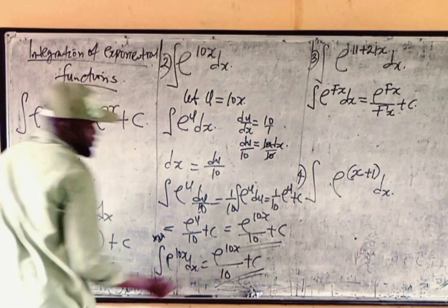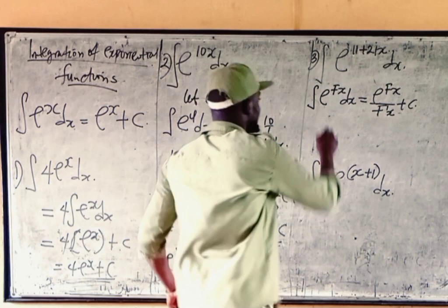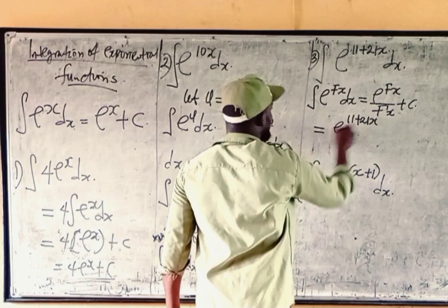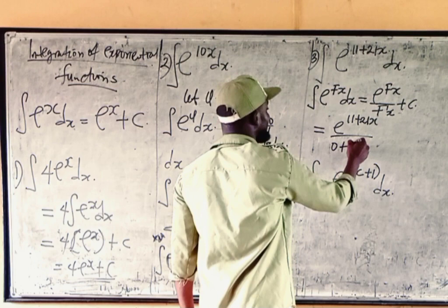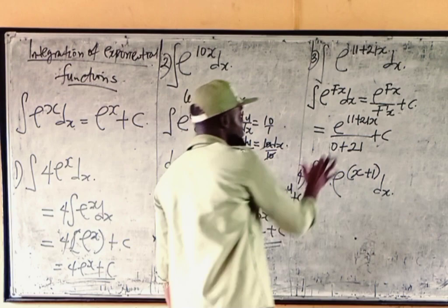So we can apply this formula now. We'll be having exponential of 11 plus 21x over the derivative of that, which is 0 plus 21, that is 21, plus c. So that's also equal to exponential 11 plus 21x over 21 plus c.